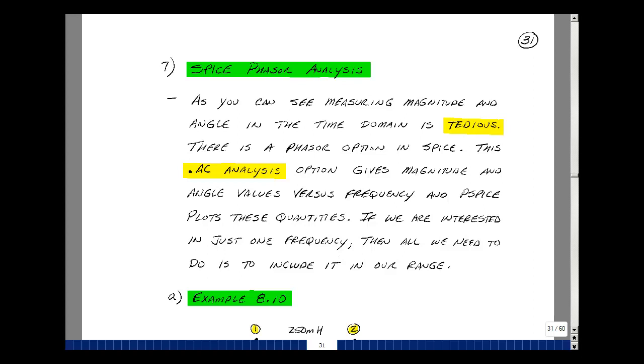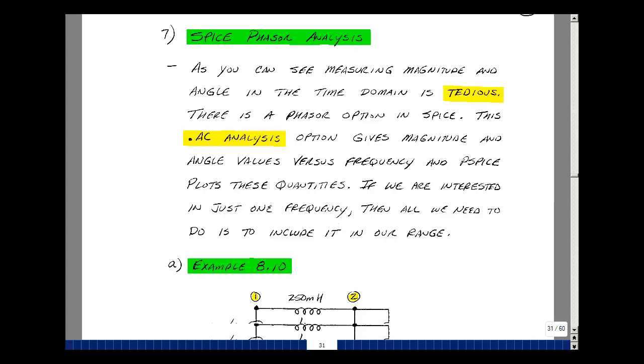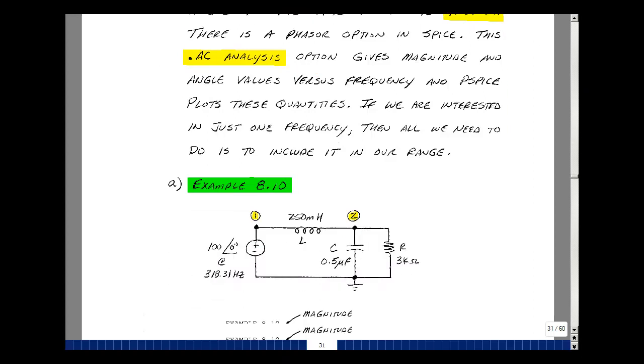As we've seen in our last video, measuring magnitude and angle in the time domain can be quite tedious. Turns out there actually is a phasor option in the original SPICE program that also exists in PSPICE. It's invoked with what's called the .AC analysis option. Let's take a look at that last example again and do it in the frequency domain instead of the time domain.